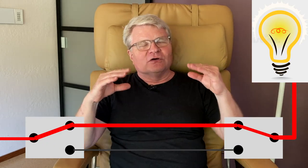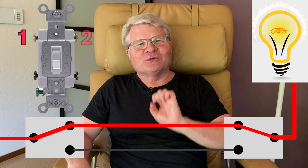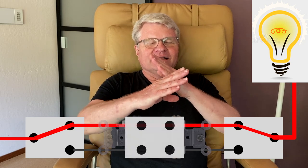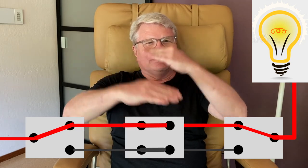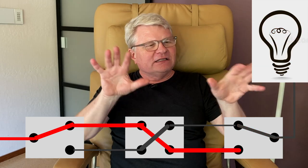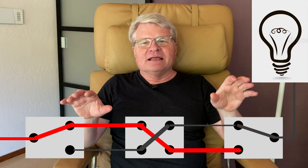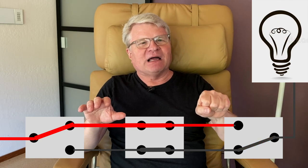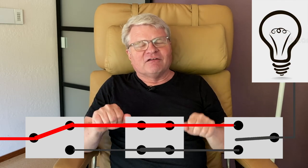If you want to control a light from more than two locations — three, four, or five — you put switches in the middle called four-way switches, because they have four terminals and should really be called four-terminal switches. What those do is toggle the two wires, effectively flipping them over, so any switch along the way can decide to jump on the line that has power or get off it to turn the light on and off.